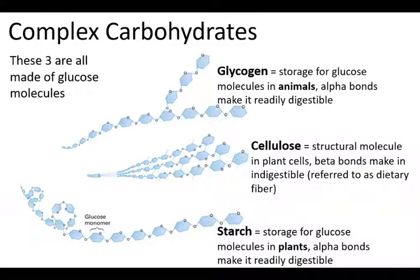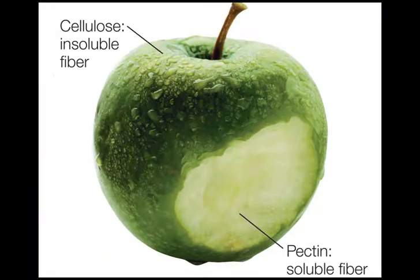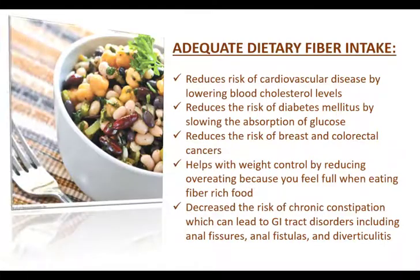In nutrition, this type of molecule is called dietary fiber. We need a mix of soluble and insoluble fiber in our diets. Fiber is really important — it can help you lower your blood cholesterol, reduce your blood sugar spikes after eating, and reduce your risk of breast cancer and colorectal cancers. It can help with weight control because it makes you feel full and helps prevent overeating. And it's important to avoid constipation, which can lead to health issues like anal fissures, anal fistulas, and diverticulitis.